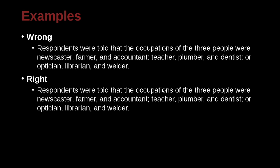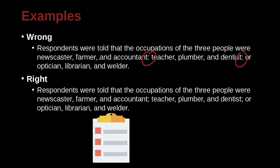'Respondents were told that the occupations of the three people were newscaster, farmer, and accountant; teacher, plumber, and dentist; or optician, librarian, and welder.' Here we have three lists, each containing three items. Within each list, items are separated by commas with a conjunction before the last item. But to separate the three lists from each other, we use semicolons. So the pattern is: comma, comma, conjunction — then semicolon — comma, comma, conjunction — then semicolon — to the final list.